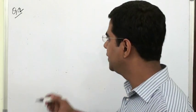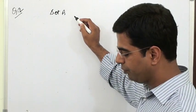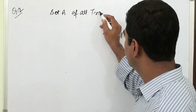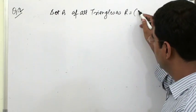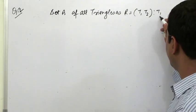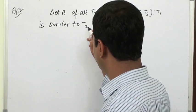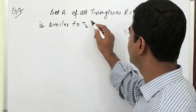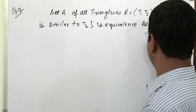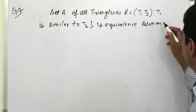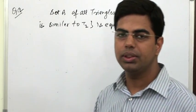Relation R is defined in a set A of all triangles as: T1 is related to T2 such that T1 is similar to T2. We need to show that this is an Equivalence Relation.